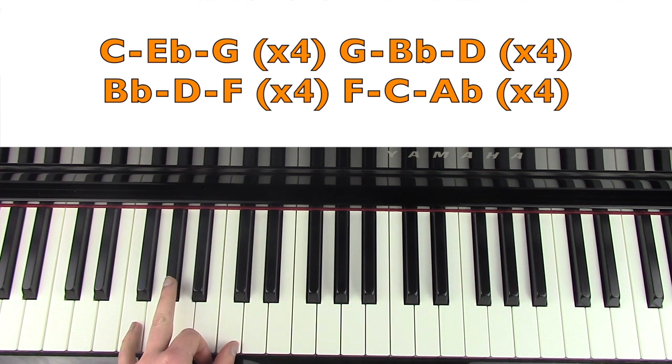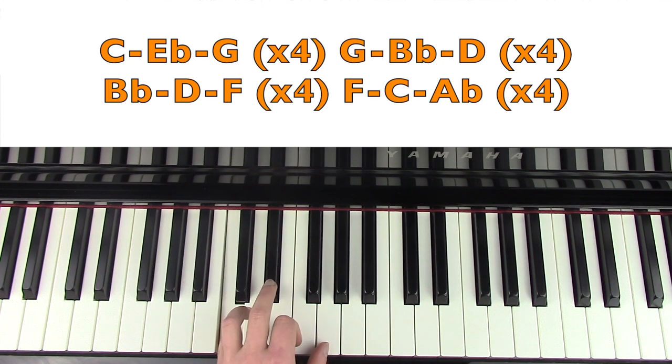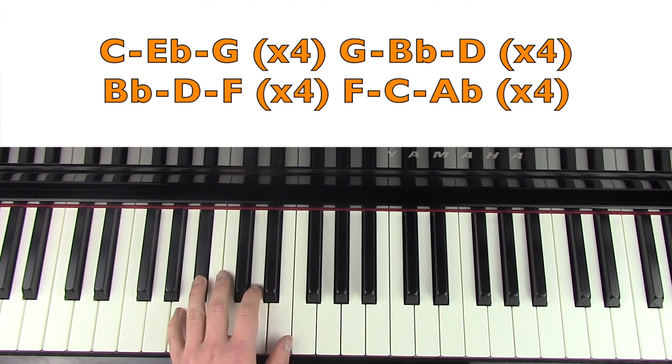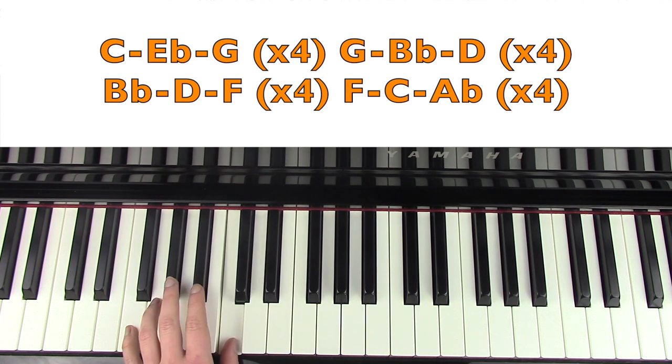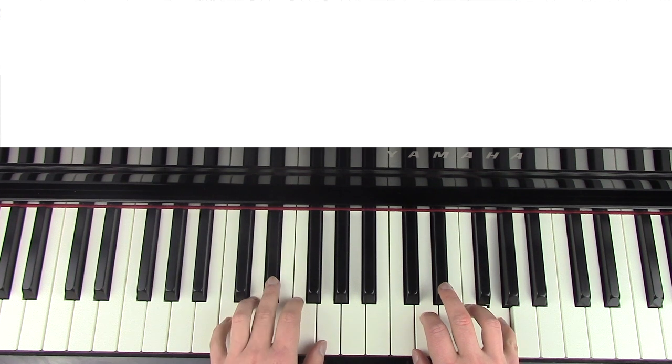Then you're going to move to a B flat major, which is B flat, D and F, and that's for four times as well. Then you're going to move down to an F minor, but we're going to play it F, C, A flat, F, C, A flat, which is four times as well. Then all of that repeats. I'll just go through that left hand again: first C minor four times, G minor, B flat major, F minor. I'm going to fit that together for you now, very slowly.